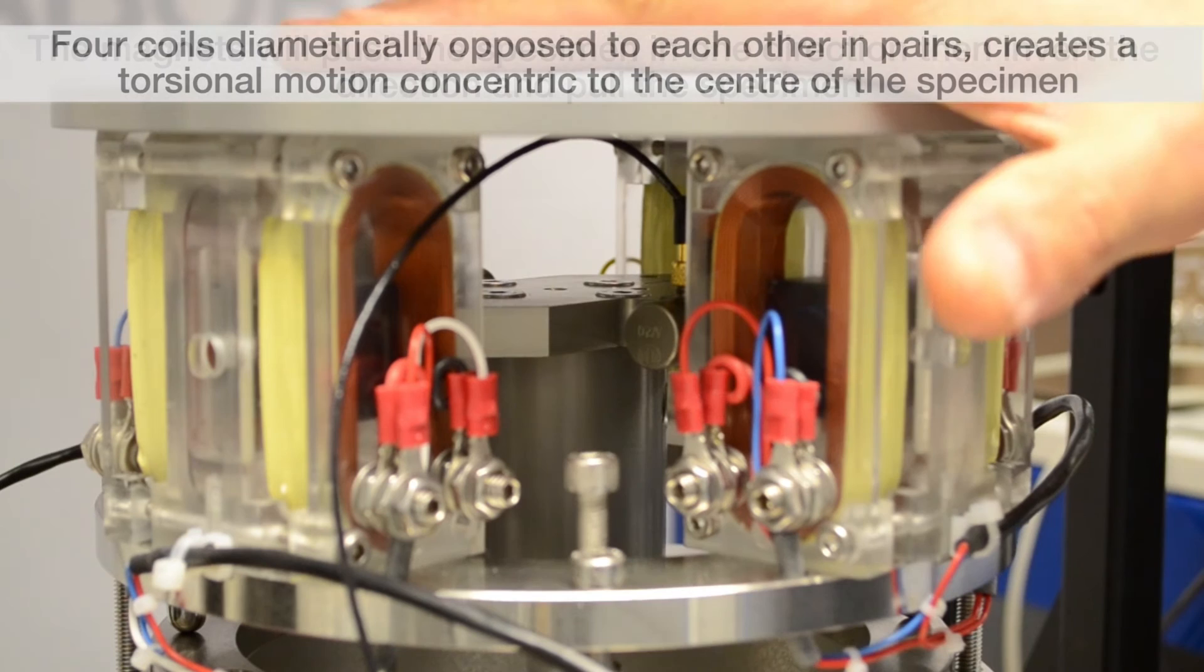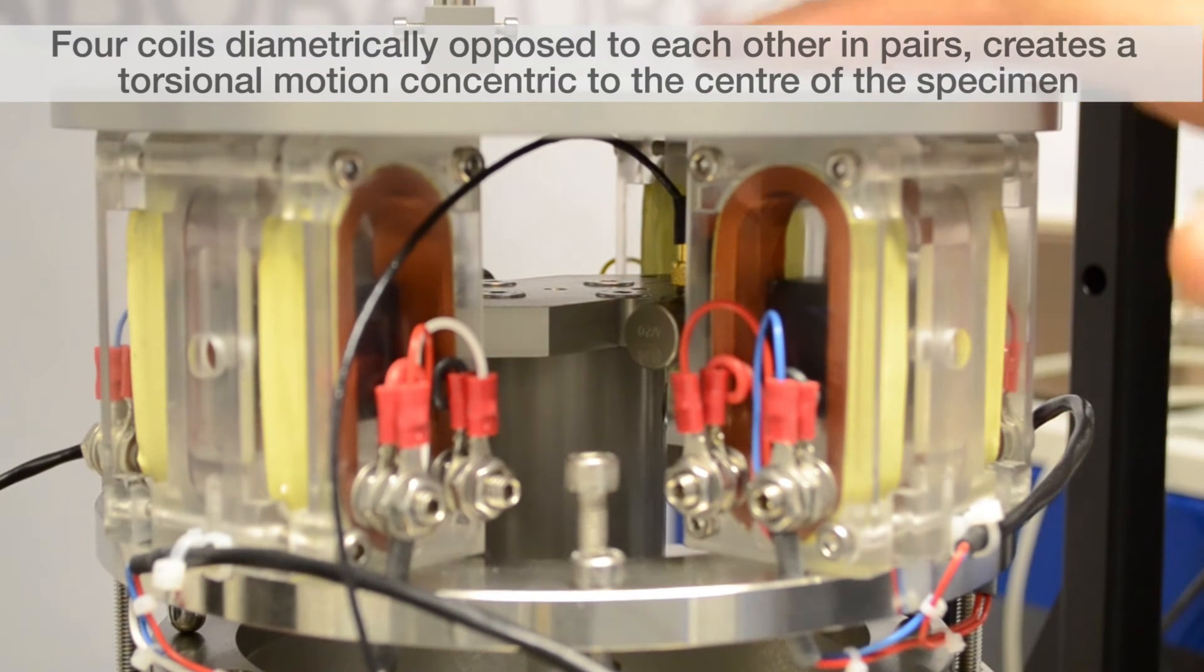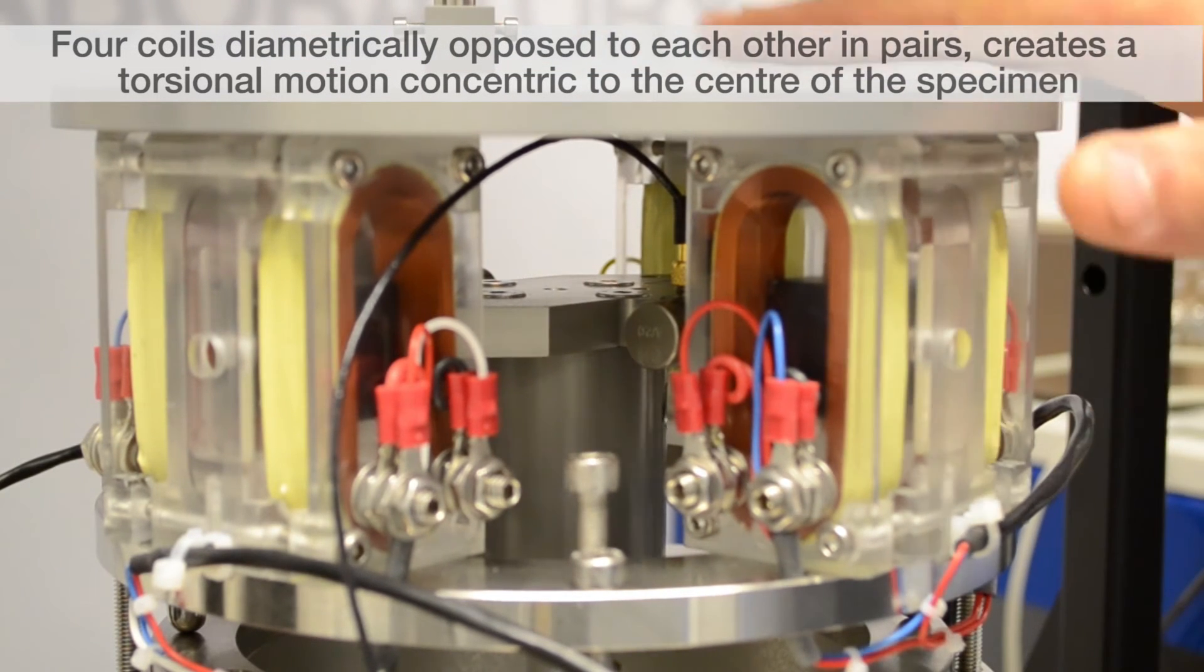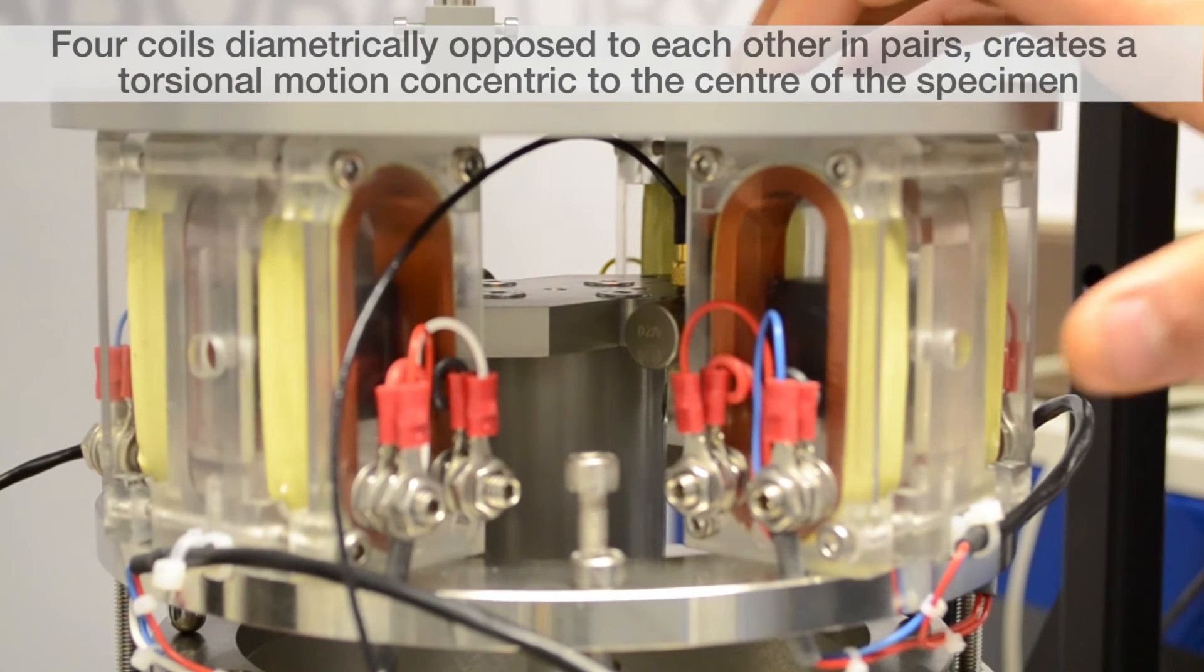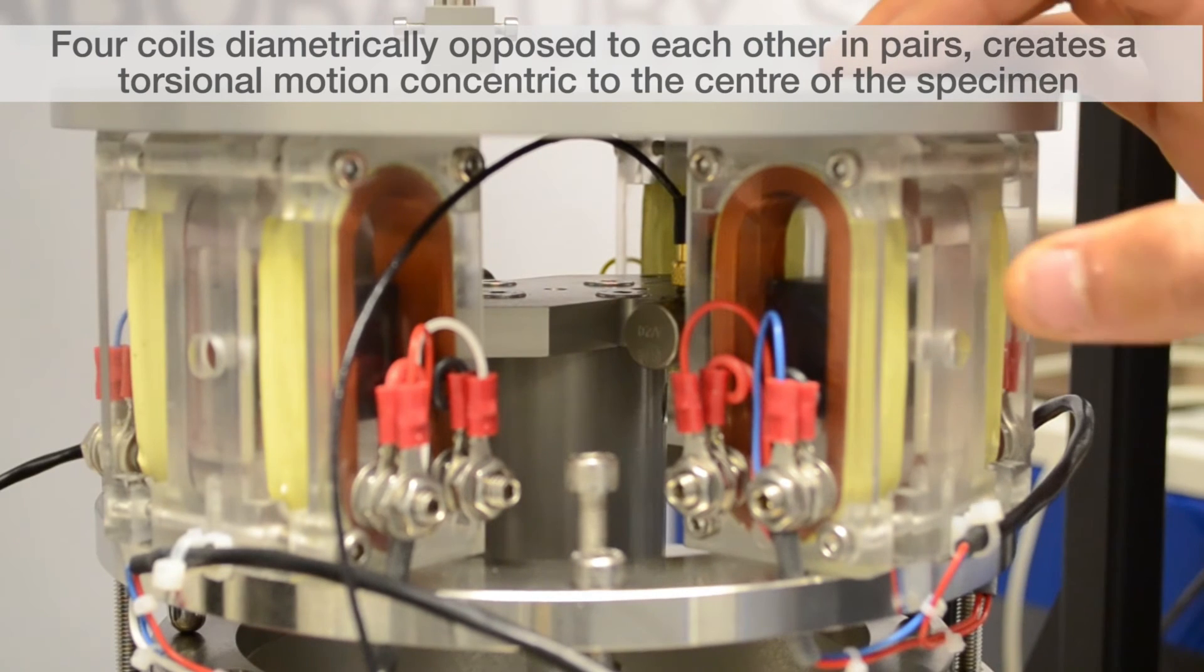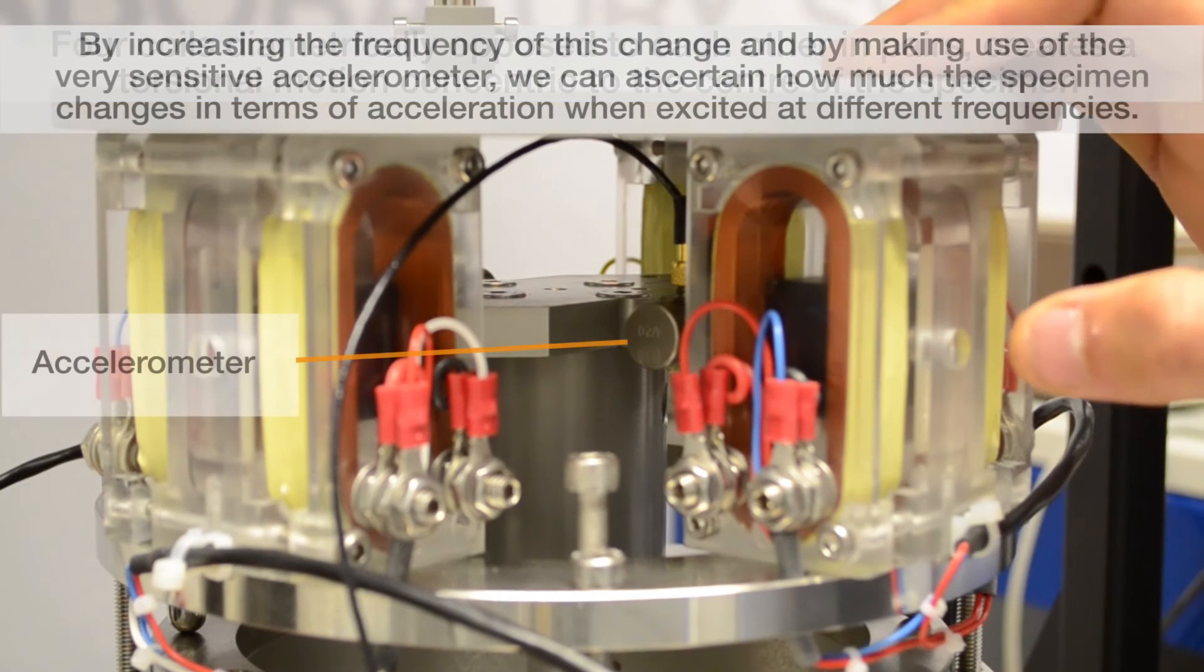By having four coils diametrically opposed to each other in pairs, what we have is a torsional motion that's concentric to the center of the specimen.